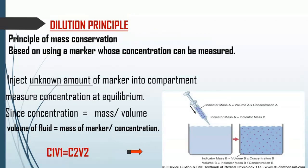Now let's look at the dilution principle — the principle of conservation of mass. A tracer is injected into the body. The mass of the indicator injected is known, and its concentration in the body can be measured. Since concentration equals mass over volume, the volume of distribution equals the mass of the marker over the concentration. Whenever you are given the mass of the indicator and the concentration, the volume of distribution in a specific compartment can be determined.